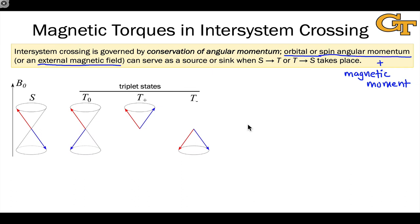To understand what needs to happen in the vector model of spins for intersystem crossing, let's remind ourselves of what the singlet and triplet states look like. Here's the singlet state with the two electron spins anti-parallel. And here are the three triplet substates with the z-component equal to zero (T0), positive one (T+), and negative one (T−). Any kind of intersystem crossing is going to involve the conversion of the singlet to one of these triplet states or vice versa. Remember that although these are in general degenerate, in a magnetic field T0, T+, and T− will be associated with different energies.